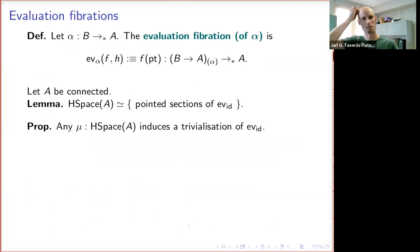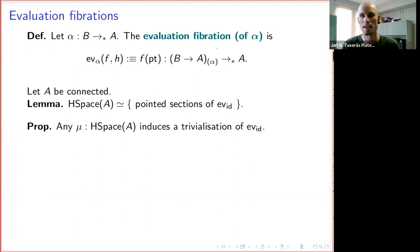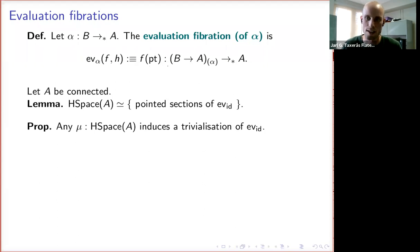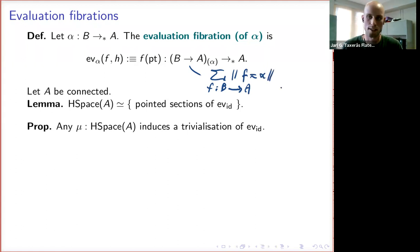Now let's talk about evaluation fibrations. Let alpha be a pointed map from a pointed type B to our pointed type A. Then the evaluation fibration associated to alpha is the following map: it takes a map from B to A in the path component of alpha as an unpointed map and evaluates at the point. This is the sigma type of all f from B to A which are merely equal as unpointed maps to alpha. So that's the path component, and this is the evaluation fibration — the restriction of the map that evaluates at the point to this path component.